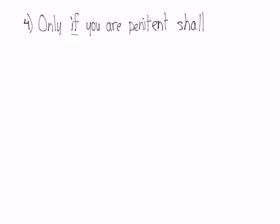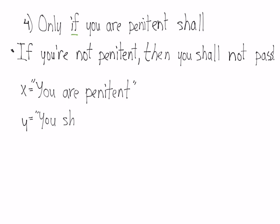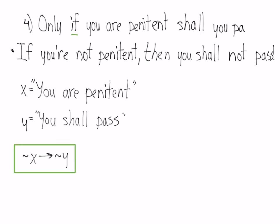Number 4: 'Only if you are penitent shall you pass.' An easier way to think about this is to translate it into the statement 'if you're not penitent, then you shall not pass.' Here the simple statements are 'you are penitent' and 'you shall pass.' The second version is very directly translated: if you're not penitent, so not x, then you shall not pass, not y.